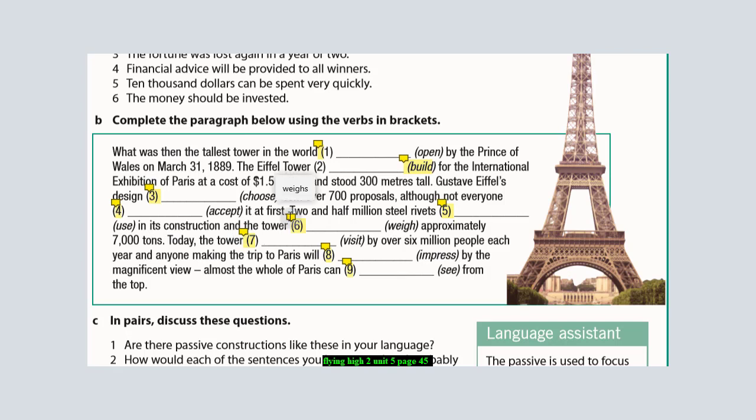And the tower weighs - here he's talking about a fact, about the tower, so we use the present simple without passive. 'Weighs' because we're talking about a fact, a truth. Approximately 7,000 tons. Today the tower - here he's talking about the present. Since he used 'today', the tower 'is visited' by over six million people. The trip to Paris 'will be impressed' - that's the future, so 'will be' plus past participle.